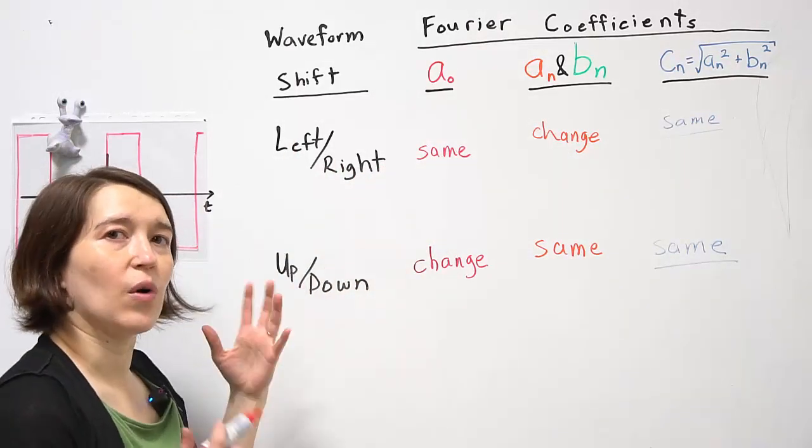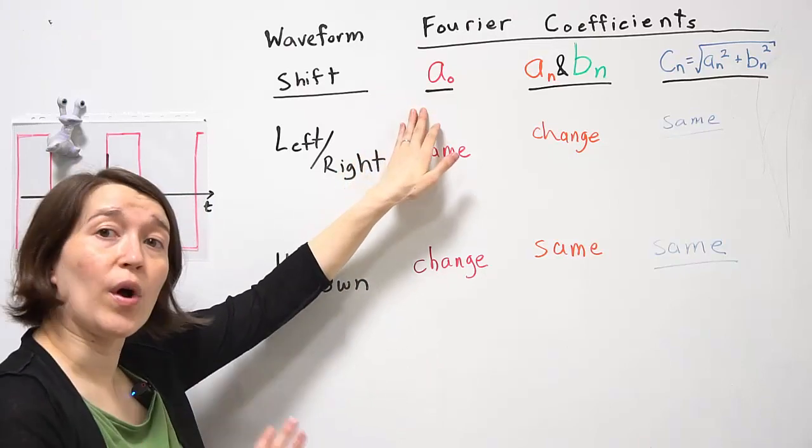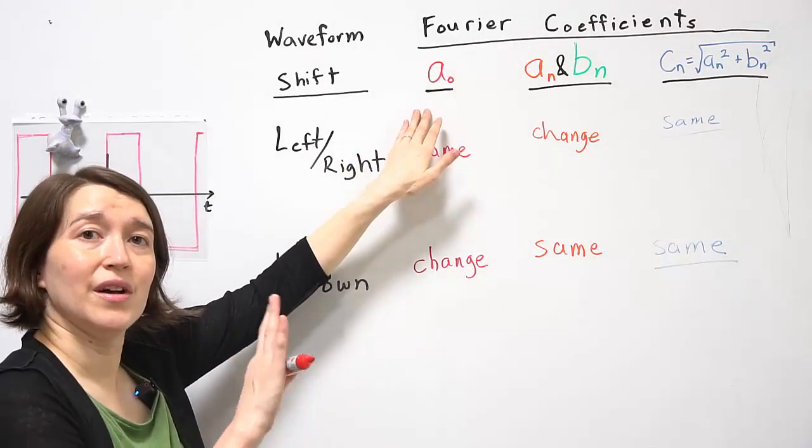But if you shift up and down, you are changing the DC value. So you just have to look at that one coefficient and make sure you adjust that one.